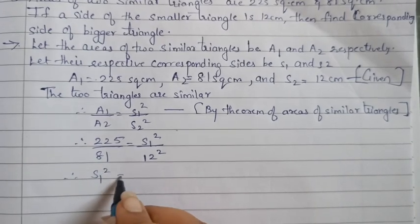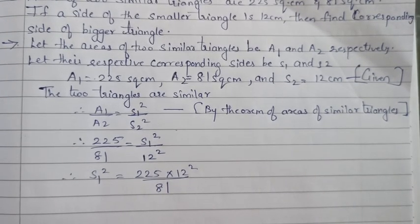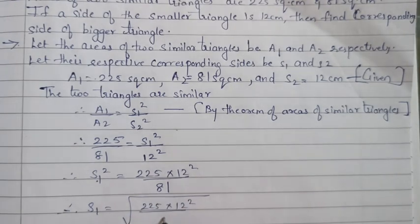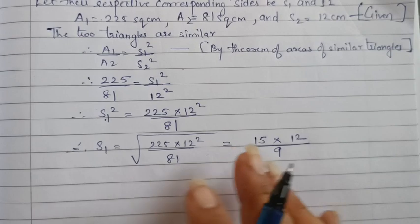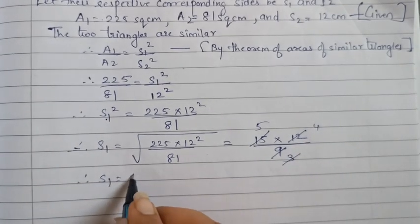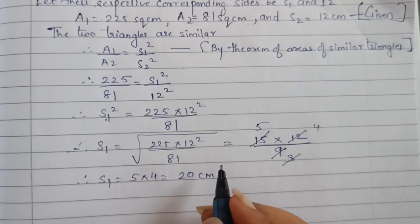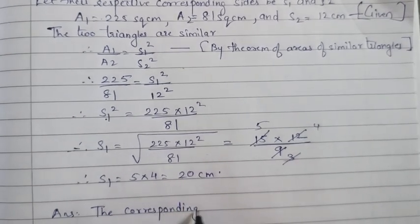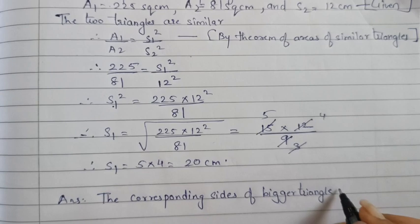Therefore, side 1 square is equal to 225 into 12 square upon 81. Taking the square root: side 1 is equal to square root of (225 into 12 square upon 81). Square root of 225 is 15, square root of 81 is 9, and we have 12 in the numerator. Simplifying by cutting: 3 threes are 9, 3 fives are 15, 3 fours are 12. Therefore, side 1 is equal to 5 into 4, that is 20 cm. The corresponding side of the bigger triangle is equal to 20 cm.